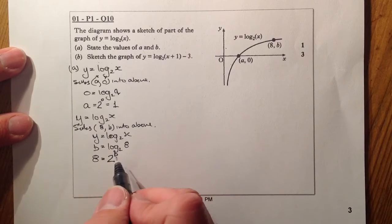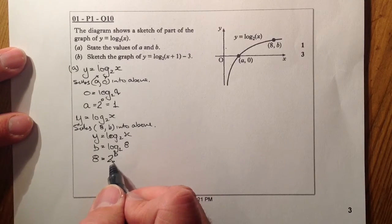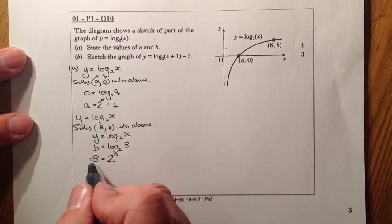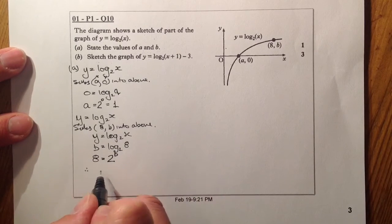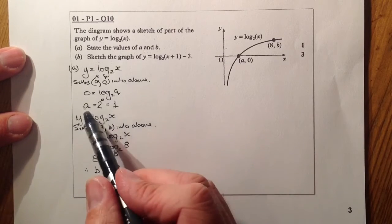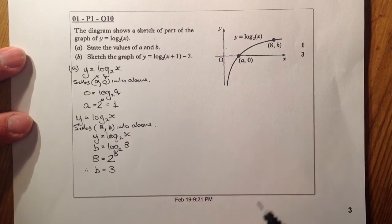So 2 to the power of b is going to equal 8, so 2 to the power of 3 equals 8, therefore b is going to equal 3. So I've got a equals 1, b equals 3.